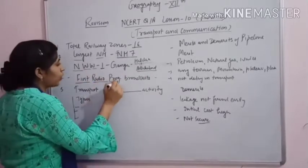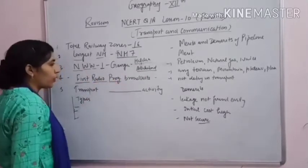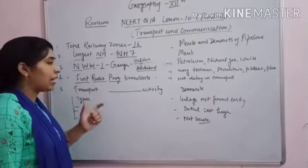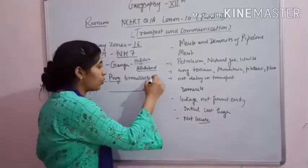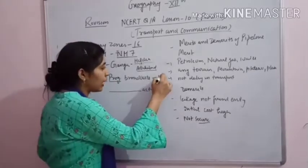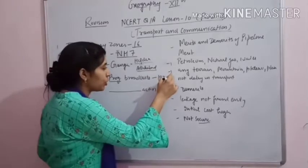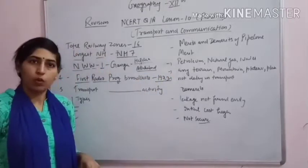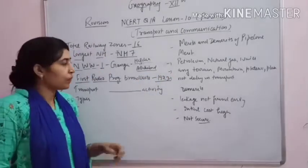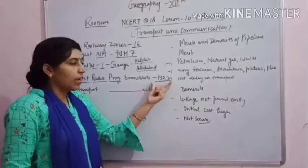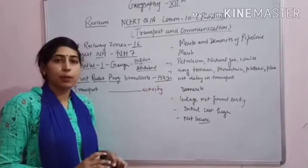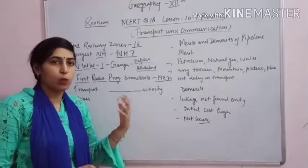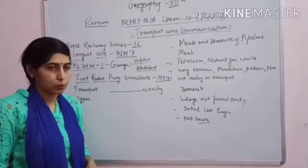The next question is: when was the first radio program broadcast? The first radio program was broadcast in 1923. In 1923, the first radio program was broadcast and it reached the people.